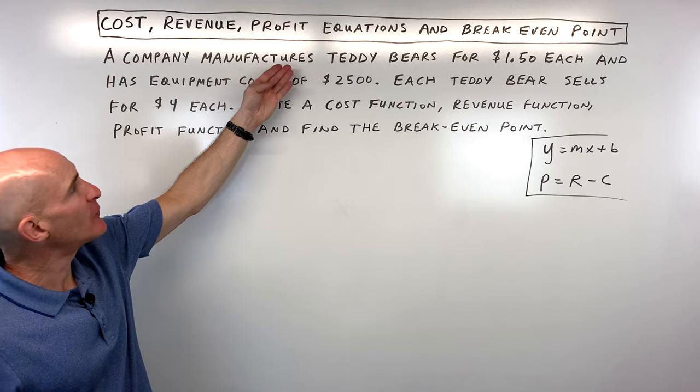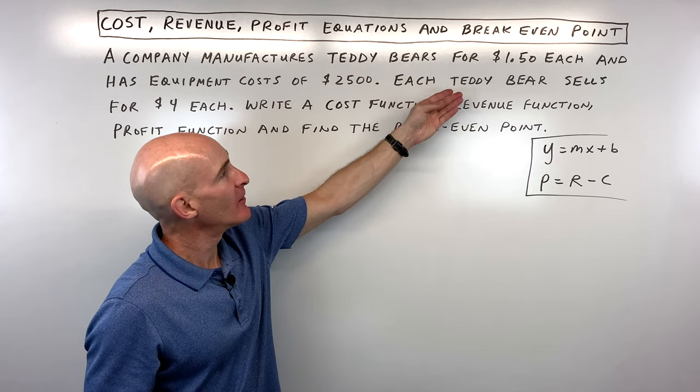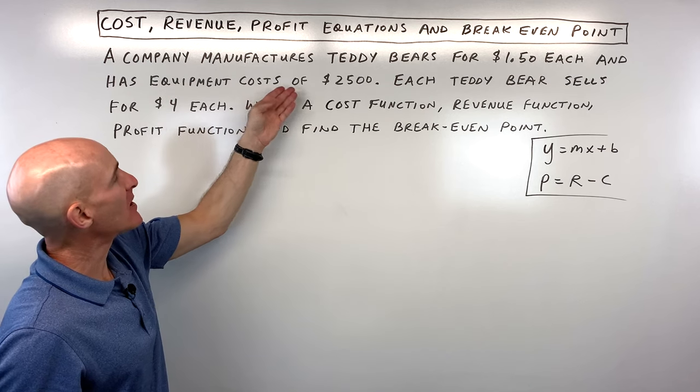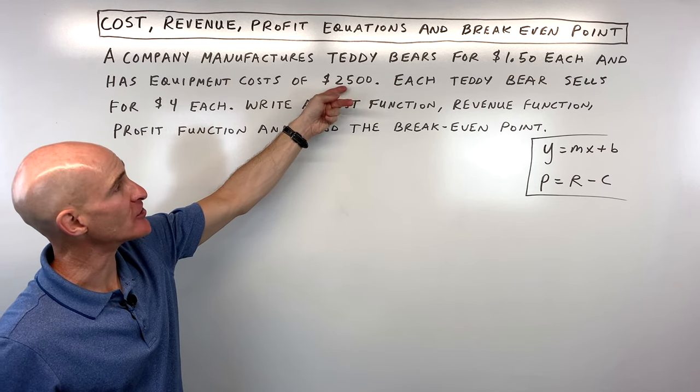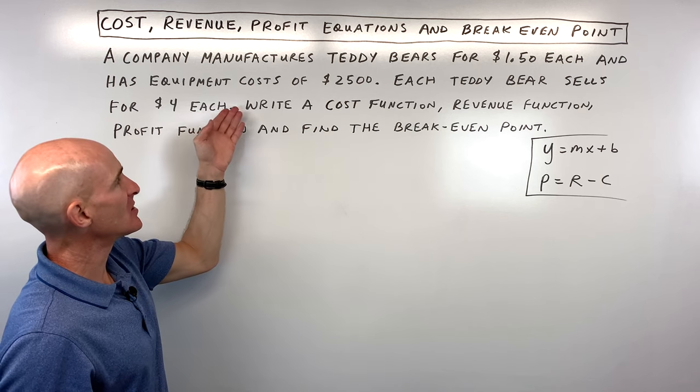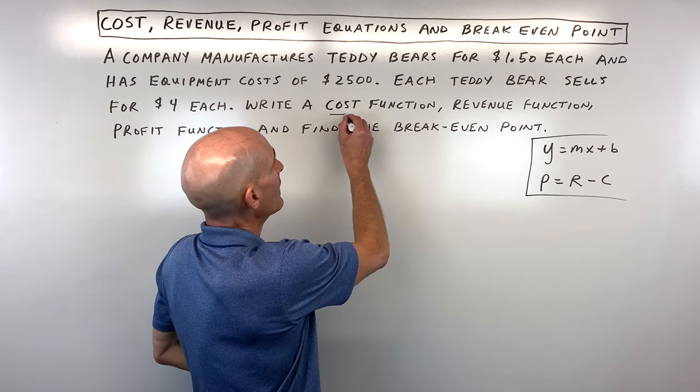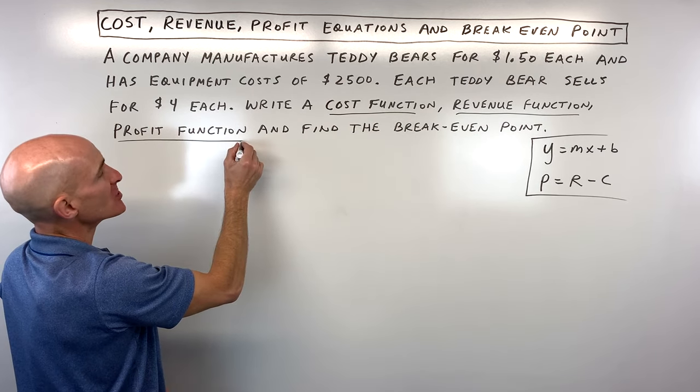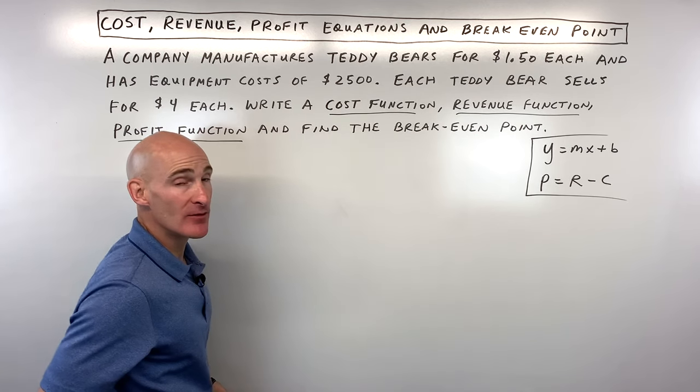We've got a company that manufactures teddy bears for $1.50 each, and it has equipment costs of $2,500. Each teddy bear sells for $4 each. Can you write a cost function, a revenue function, a profit function, and then can you find the break-even point?